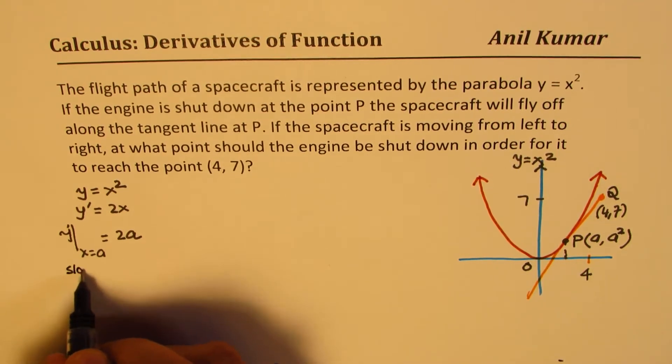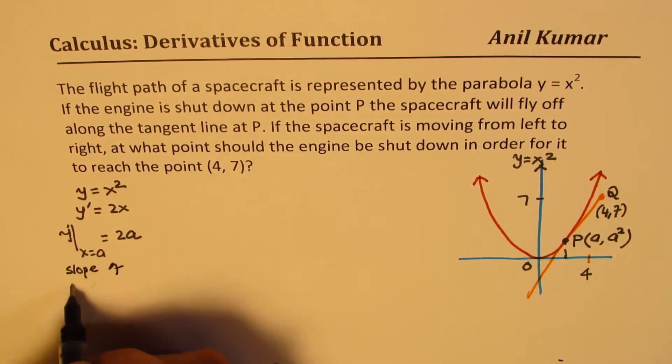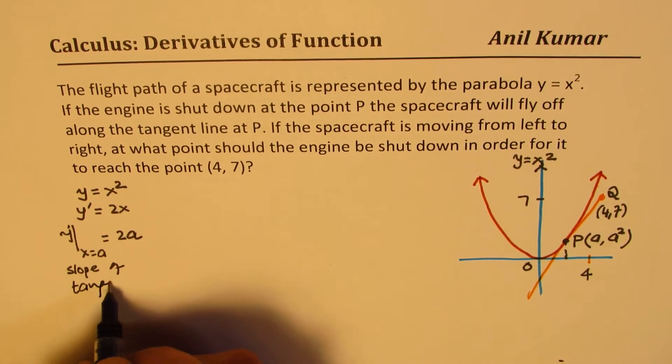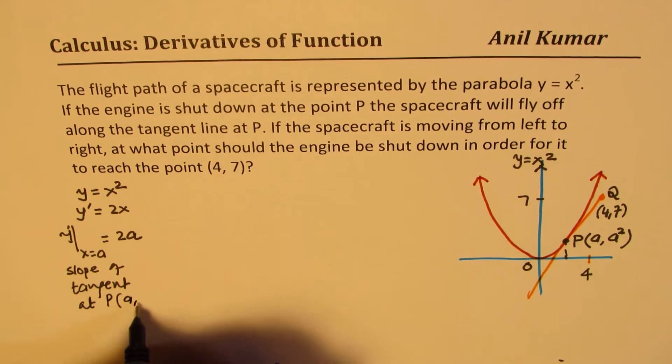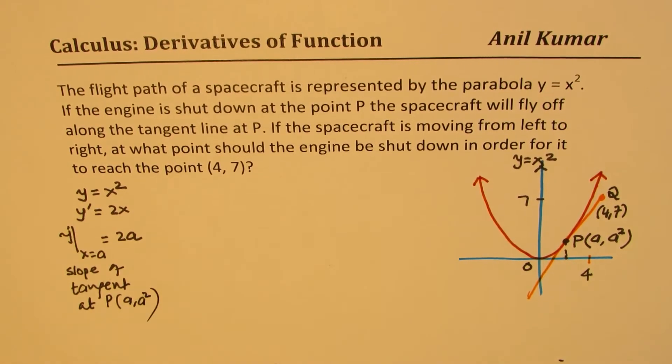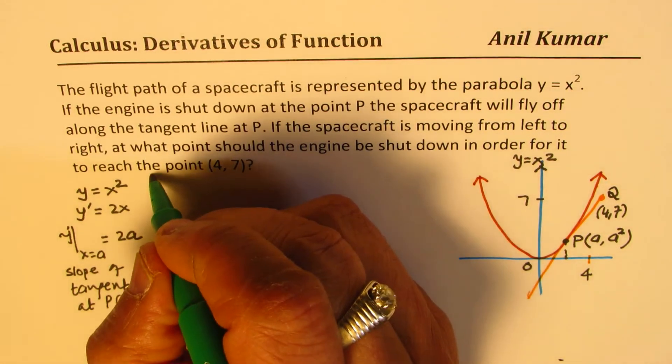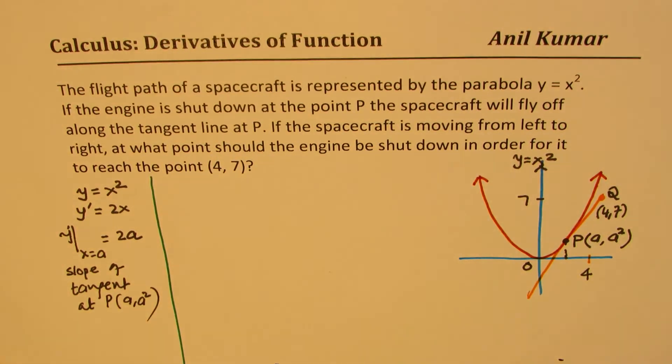So we can write this as slope of tangent at P, which is (a, a squared). So I hope this much is clear to you. So from the derivative, we kind of get this slope.